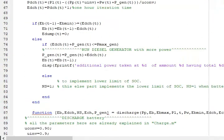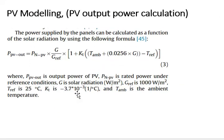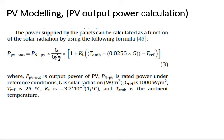Let's discuss PV modeling. The power supplied by the PV panels can be calculated as a function of the solar radiation using the following formula. PPV_out is the output power of PV, PN is the rated power under reference conditions, G is solar radiation, G_REF is 1000 W/m², T_reference is 25°C, KT is 3.7×10⁻³, and T_AM is the ambient temperature.